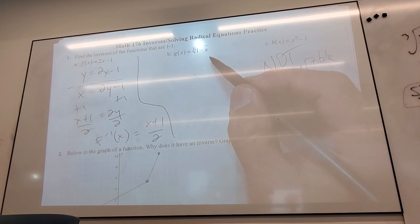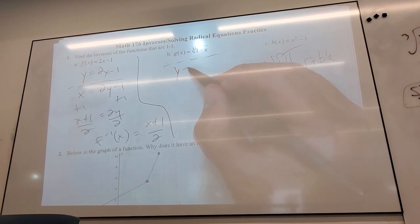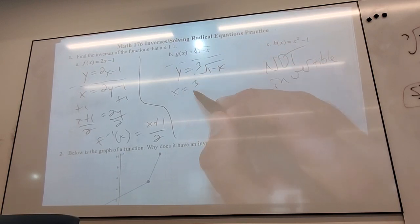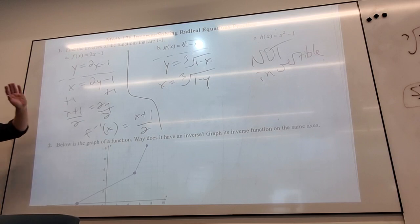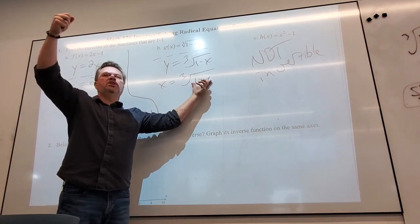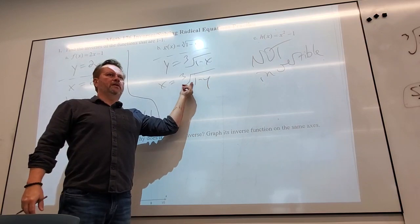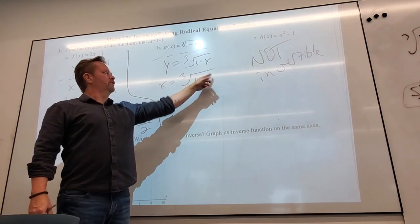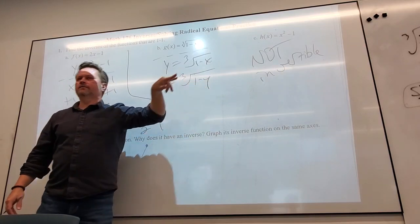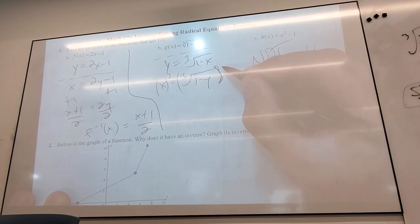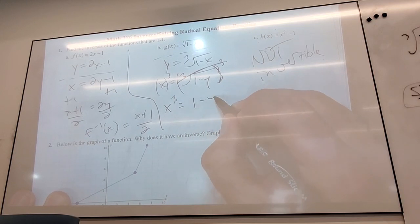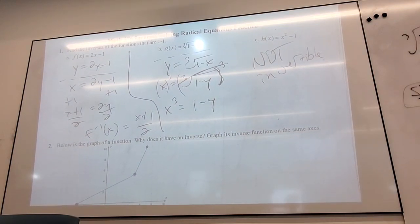It is invertible, so bring the y back and switch x and y. This is where people get tripped up. Is my variable stuck in something? Then you kill that thing. You cube both sides so that you can get access to the variable. The cube and the cube root kill each other.